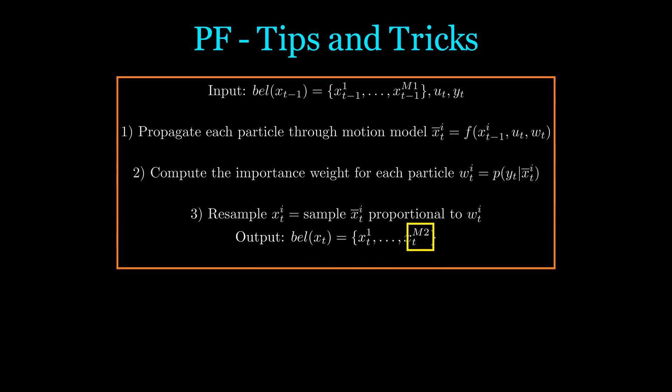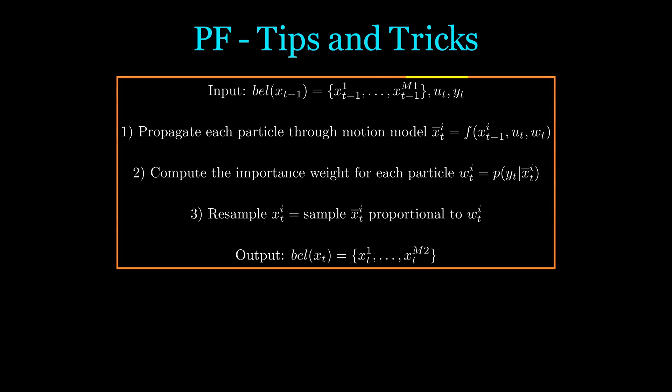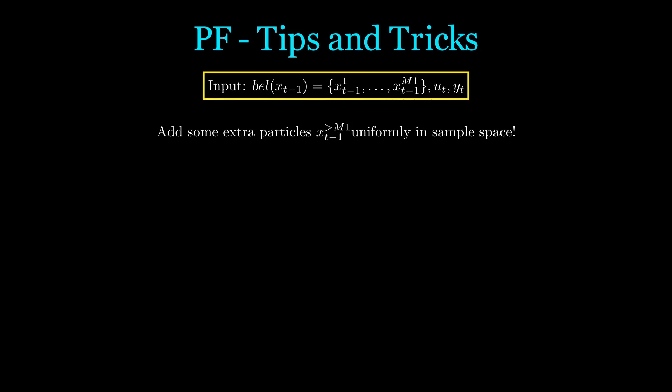Now let's talk about some tips and tricks. The particle filter is an any-time algorithm, meaning we can keep going as long as we have time, and the longer we run, the better the performance. So just keep adding particles until you actually need the results. Another common method is to keep adding particles until the weight of your resampled particles exceeds some threshold — if you pick endpoints that happen to be the M lowest probability particles, you probably want to continue sampling. Another trick is to add some randomly sampled particles from the state space to your input particles. If you lose your correct state, this might add it back in. Worst case, you'll get a mismatched sensor reading, assign a low weight, and lose the particle again. This is why the particle filter is so robust — it's sometimes called survival of the fittest.